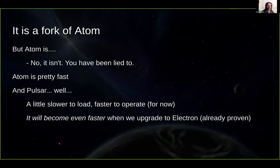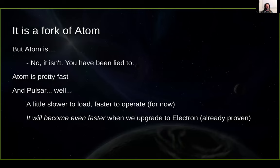The first thing is when I say that I'm working on a fork of Atom, most people say 'but Atom is slow.' I want to start by saying no, it isn't. It's not slow, it doesn't consume a lot of memory. Those things were fixed in 3.1.0 and 3.1.2. Atom is actually pretty fast. But Pulsar — it's slower to load and faster to operate because we had to do some trade-offs for reviving the editor. We already proved that it could become even faster when you upgrade to the newest Electron version, because as you can see on the newer slides, things are rough as of now.